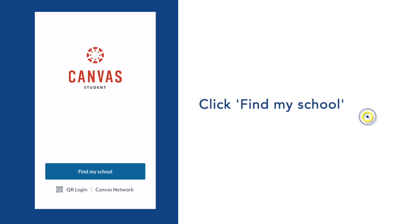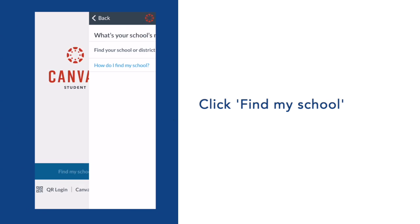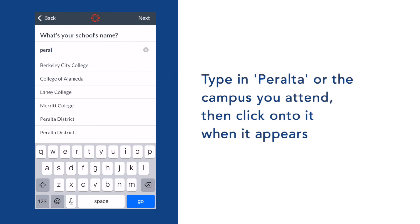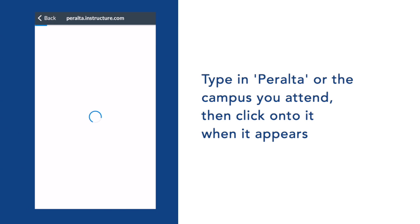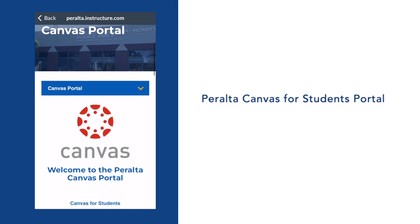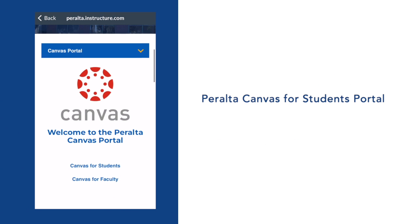Now, click on Find My School. Next, type in Peralta, then select Peralta District or the campus you attend. This will bring you to the Canvas portal.